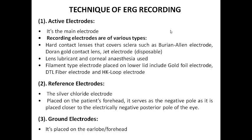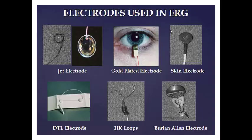The second type are reference electrodes, made up of silver chloride, placed on the patient's forehead, serving as a negative pole as it is placed closer to the electrically negative posterior pole of the eye. The third type is the ground electrode, placed on either the earlobe or forehead.